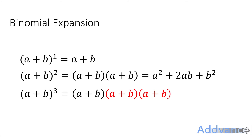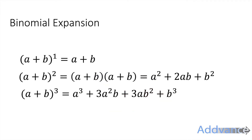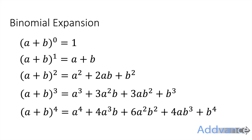To expand (a+b) to the power three, we expand the first two brackets using the crab's claw, and then expand again, giving a cubed plus 3a squared b plus 3ab squared plus b cubed. We can do this for all powers of (a+b). Remember: anything to power zero is one — you'll need that today.